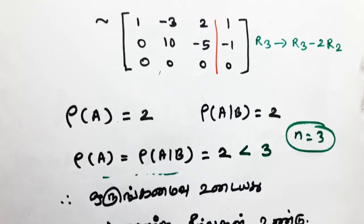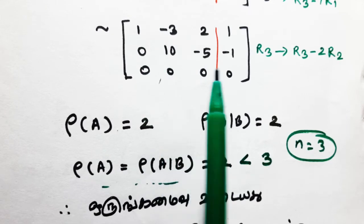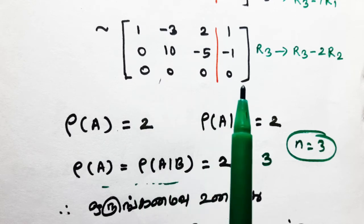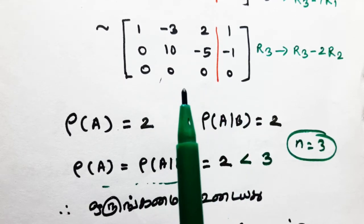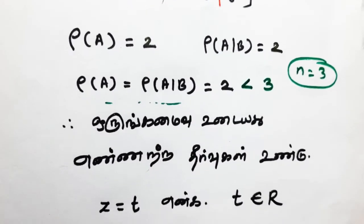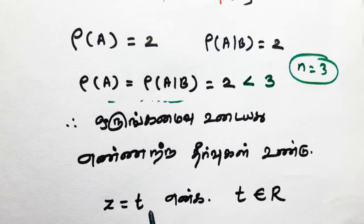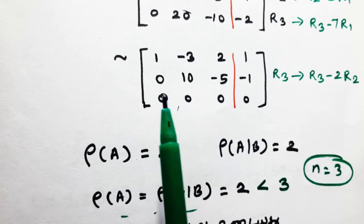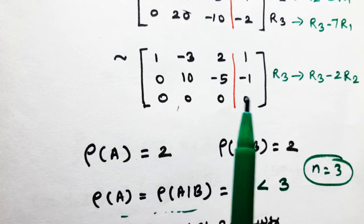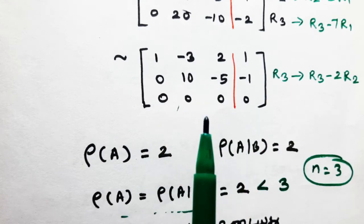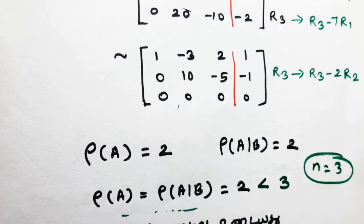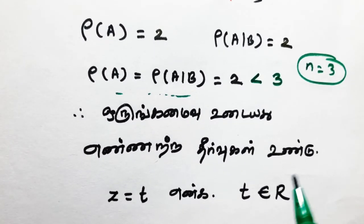The key point here is that after row reduction we effectively have 2 equations with 3 variables. Since one full row is zero, we have 2 non-zero row elements. This means we take one unknown variable as a free variable. With two zero-row variables, we assign a constant parameter T, so Z equals T where T is a real number.